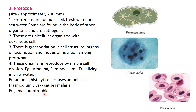Euglena is autotrophic, meaning they prepare their own food - this is possible because they have chlorophyll pigment, and therefore they are able to prepare their own food. Here are some pictures of protozoa: Paramecium looks like a slipper, having small hair-like structures called cilia, and inside, the nucleus is present. Entamoeba is in round shape and we can see the nucleus. And here is Plasmodium vivax, which is responsible for malaria.